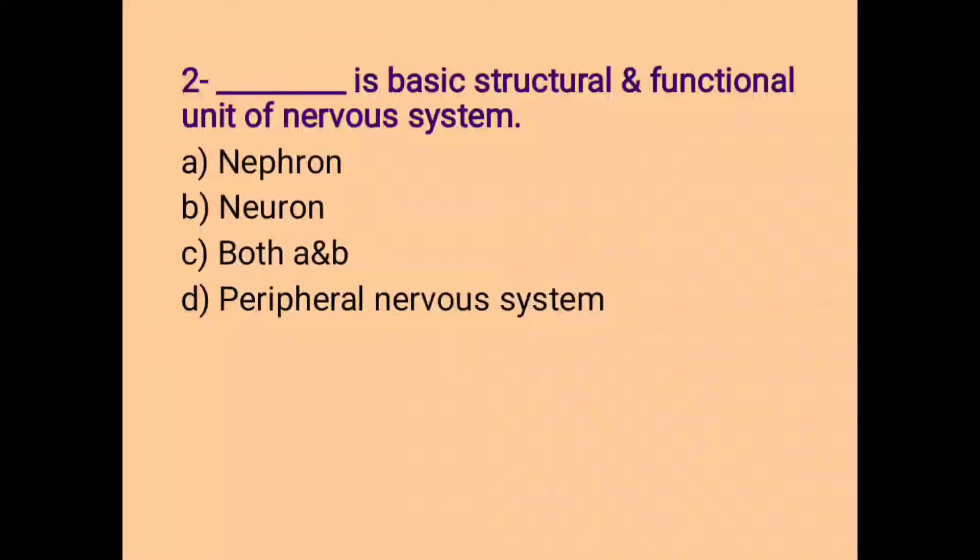Second MCQ: dash is Basic Structural and Functional Unit of Nervous System. A, Nephrone B, Neuron C, Both A and B and D, Peripheral Nervous System. And the correct option is Neuron.